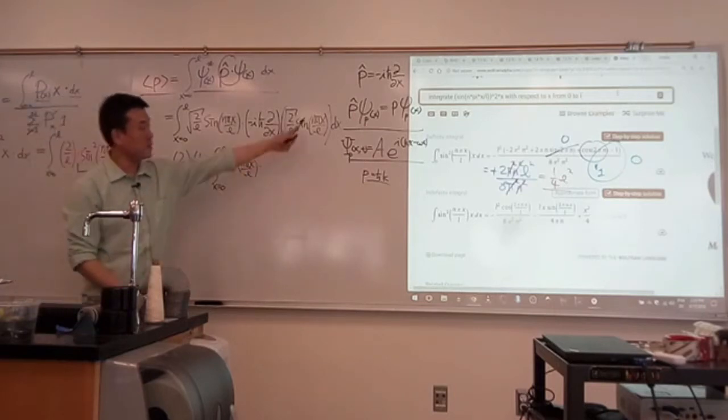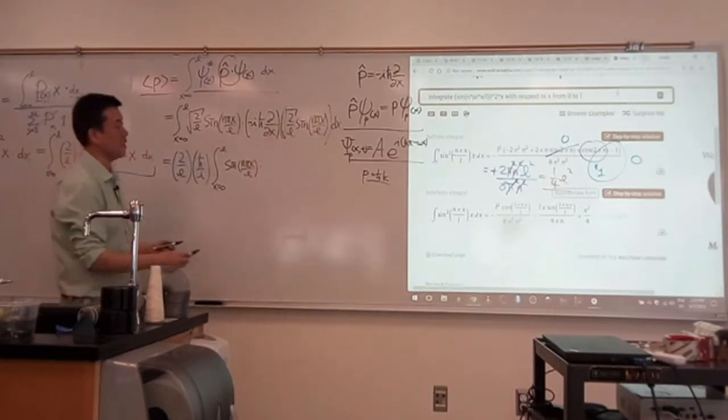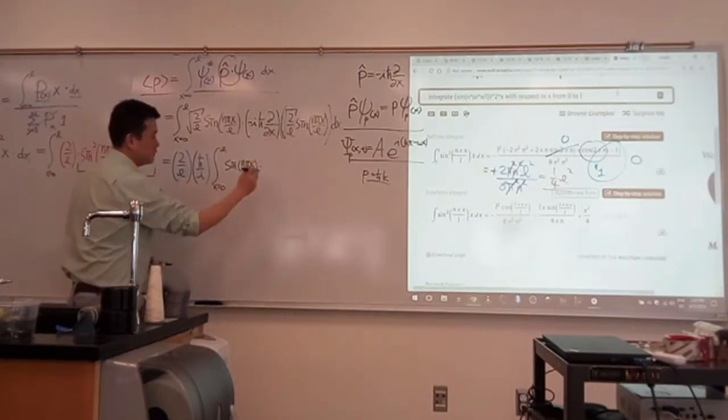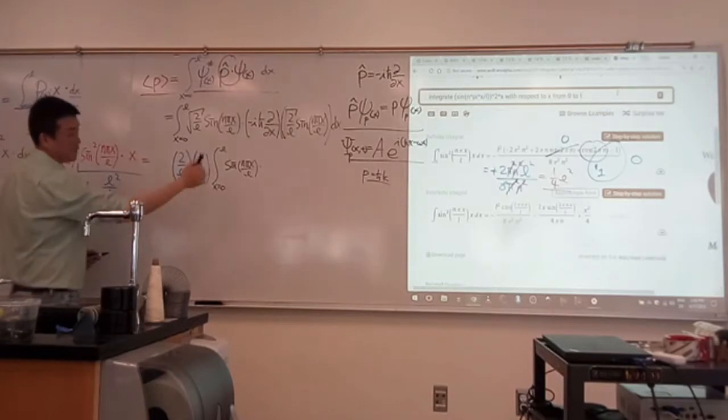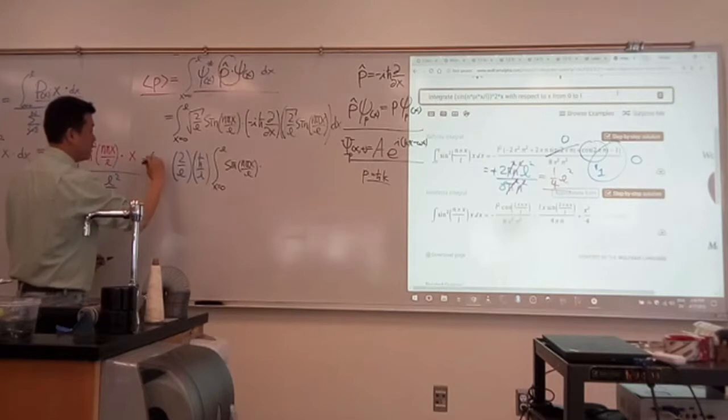Let me keep track of that factor here. So the factor that comes out when I take one derivative, that's going to be n pi over L, right? And the derivative of this is outside.